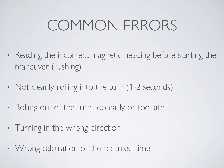Common errors observed when teaching this maneuver: First, reading the incorrect magnetic heading before starting — usually caused by rushing in, banking the aircraft and then wondering what your heading was. Second, not cleanly rolling into the turn or not holding it — if the roll-in takes more than one to two seconds, that will mess up your timing. Over-banking or under-banking will also mess up timing and likely lead to rolling out more than 15 degrees outside the acceptable range. Third, rolling out too early or too late — often caused by distraction from gaining or losing altitude.